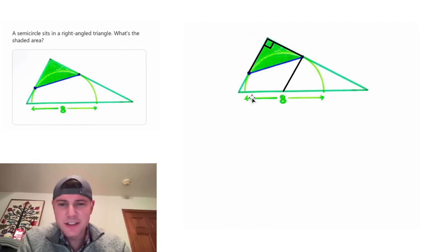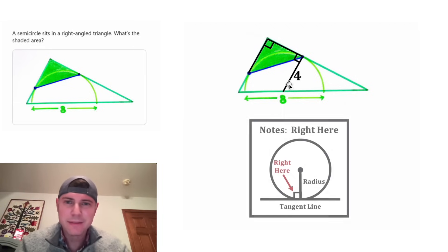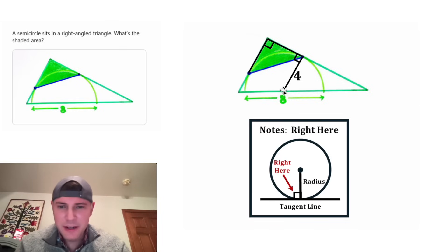Next, let's draw this radius. Since the diameter is 8, this radius is 4. This radius meets the tangent line at a right angle because the radius always meets the tangent line at a right angle. Here's some notes right here. Then next, let's draw this radius. It also has a length of 4 and also meets this tangent line at a right angle.